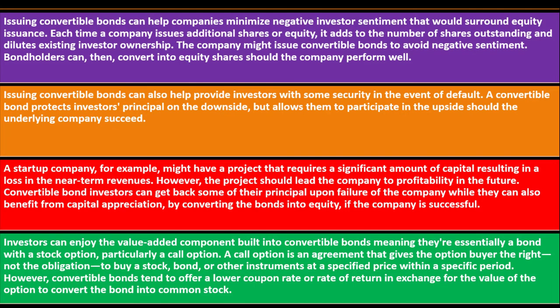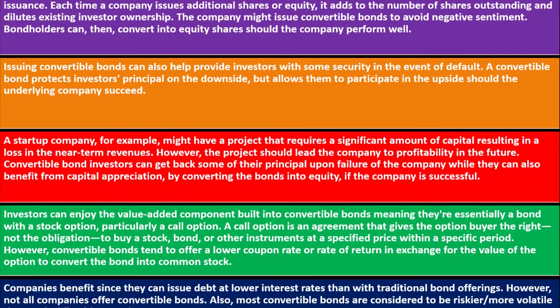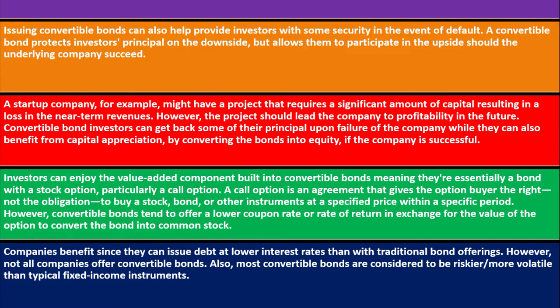Investors can enjoy the value-added component built into convertible bonds — meaning they're essentially a bond with a stock option, particularly a call option. A call option gives the option buyer the right, not the obligation, to buy a stock, bond, or other instrument at a specified price within a specified period. However, convertible bonds tend to offer a lower coupon rate or rate of return in exchange for the value of the option to convert the bond into common stock. Companies benefit since they can issue debt at lower interest rates than with traditional bond offerings. However, not all companies offer convertible bonds, and most convertible bonds are considered riskier and more volatile than typical fixed income instruments.